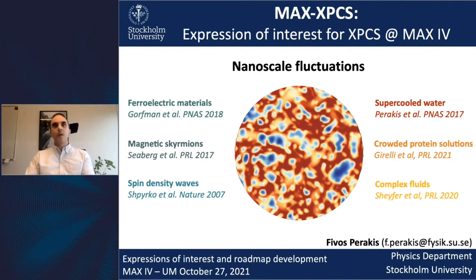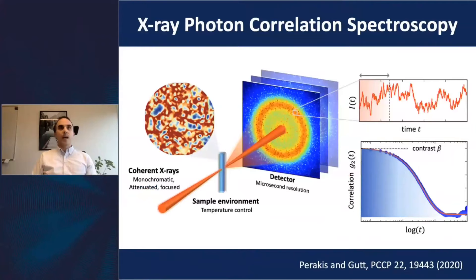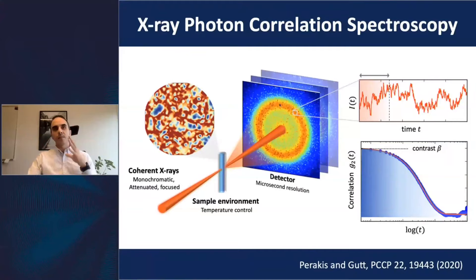We heard a lot about X-ray photon correlation spectroscopy this morning and how it is possible to look at these fluctuations by using the coherence of MAX4. This is one of the techniques that utilizes the unique coherent properties at MAX4 in order to look at the fluctuation intensity that reflects in momentum space the fluctuations happening in real space.